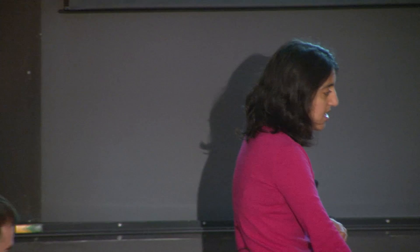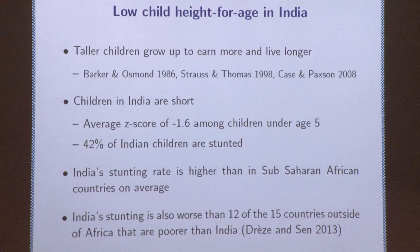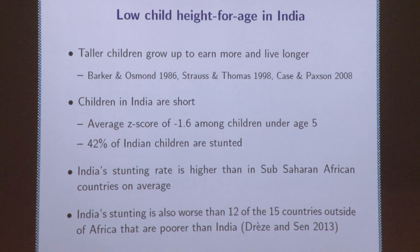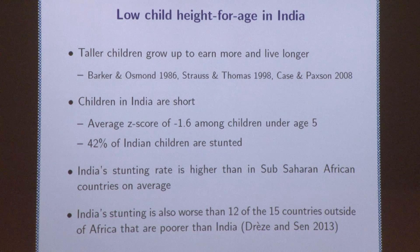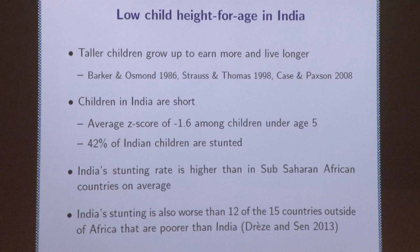The starting point is that children in India are short. Why do we care about height? Height is a very commonly used proxy for child malnutrition and inputs into child health very early in life. There's a lot of evidence that height is correlated with longer-term outcomes like adult health, education, and earnings. The standard measure uses Z-scores — measuring your height in standard deviations from the worldwide median. On average, Indian kids under age five have a Z-score of minus 1.6. And 42 percent of Indian children are stunted — that is, two or more standard deviations below the median.